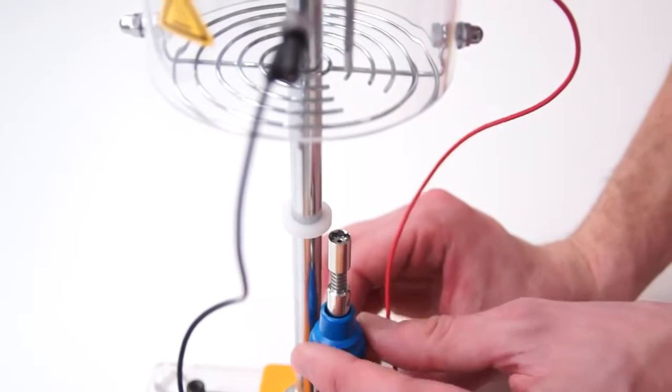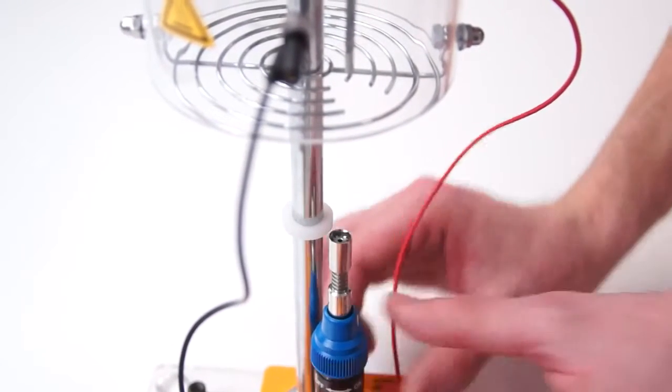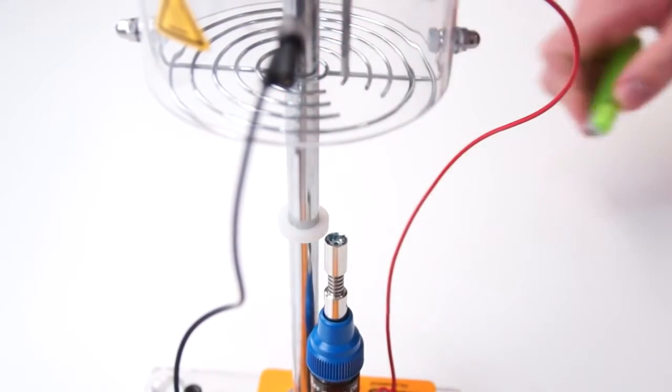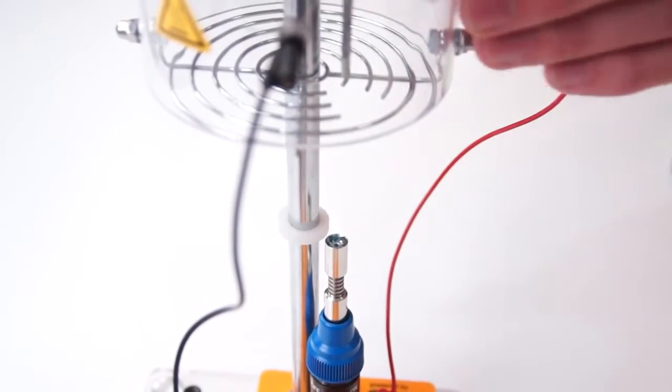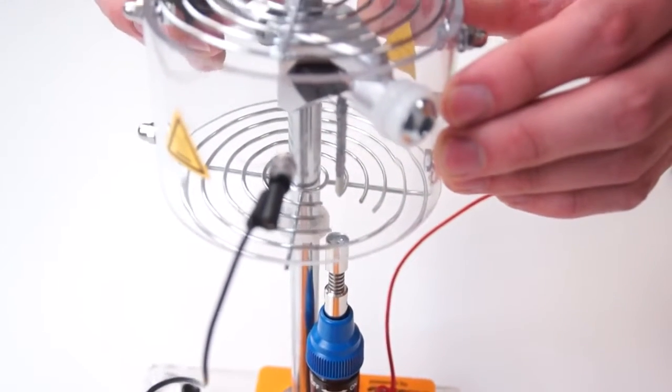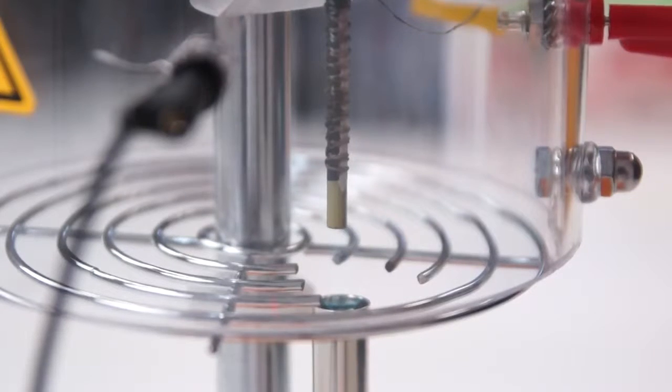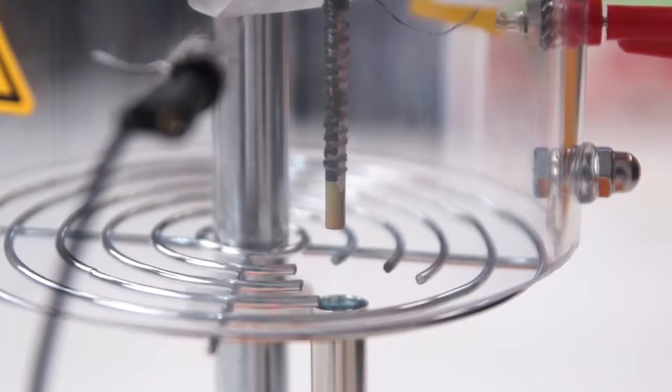For this we turn on the gas supply of the burner and ignite the propane butane gas mixture. Then we push the fuel cell carefully into the flame until the tip of the flame touches the fuel cell. As we can see the piece of metal is heated.